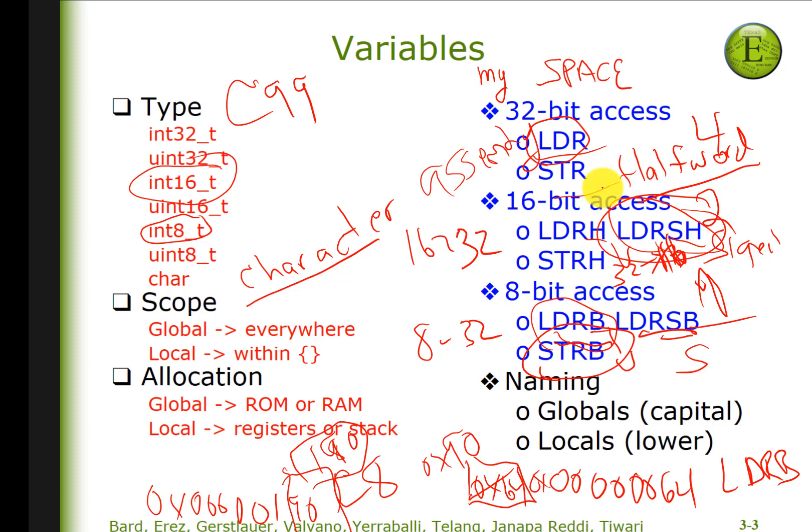We talked about local variables having scope. In other words, where do they, when do they exist? And someone correctly said everywhere, that's right. Or within some small spot, or local. And then where do they physically exist, either in memory as globals or in registers as locals.